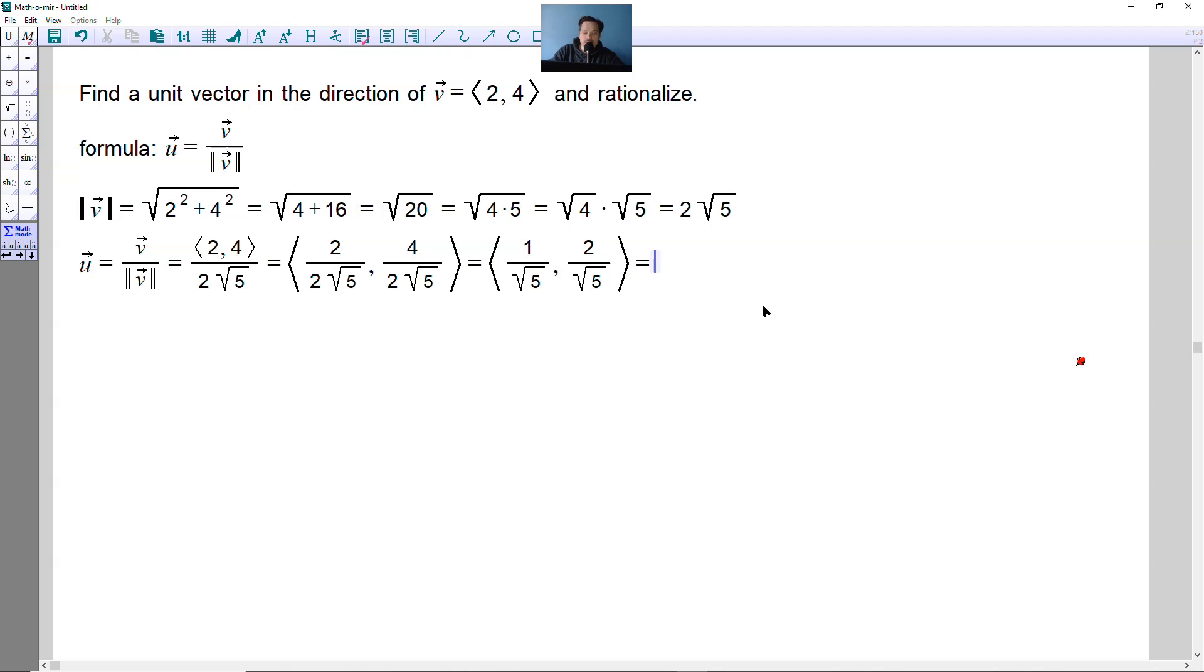So again, that's going to look like the following. You're going to take the first term. You're going to multiply by the root of 5 over the root of 5, like this in other words. So the root of 5 over the root of 5. You're going to have to do that to the second one also.